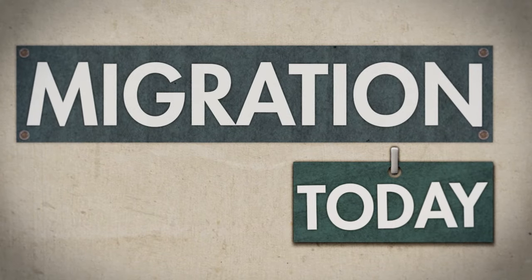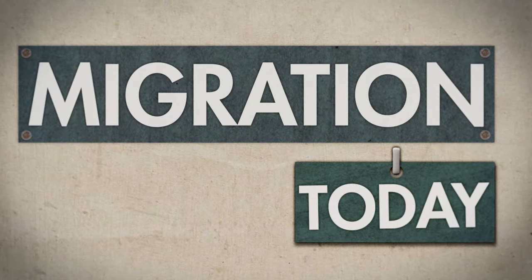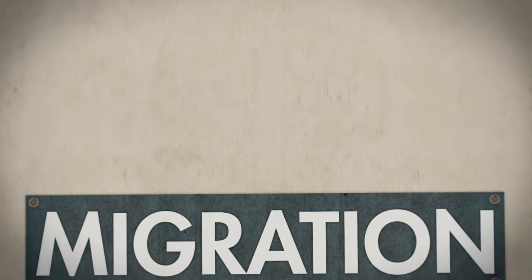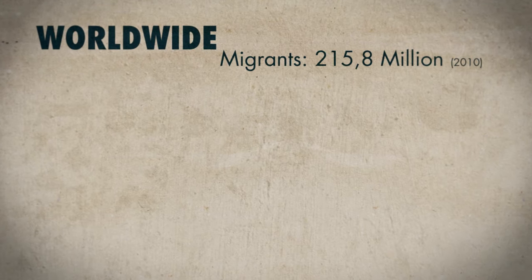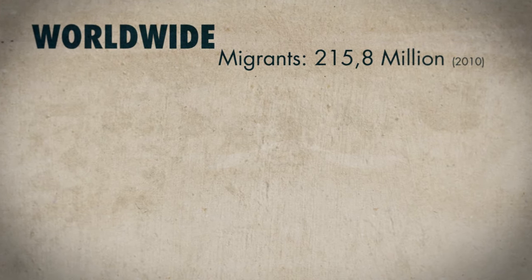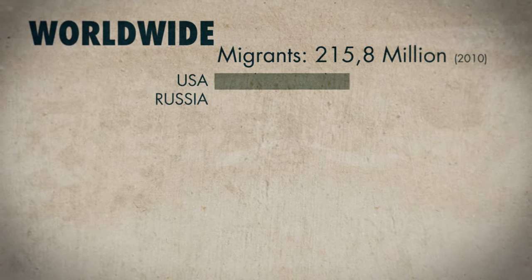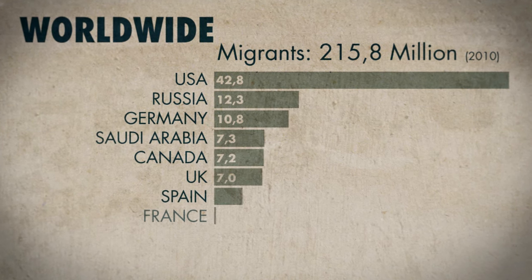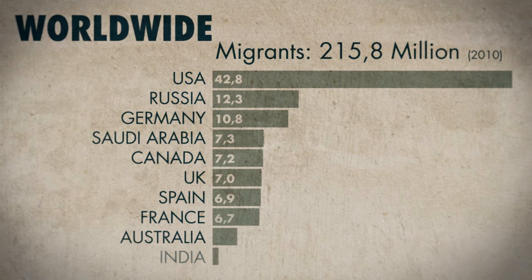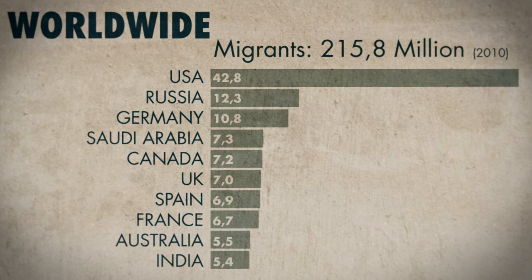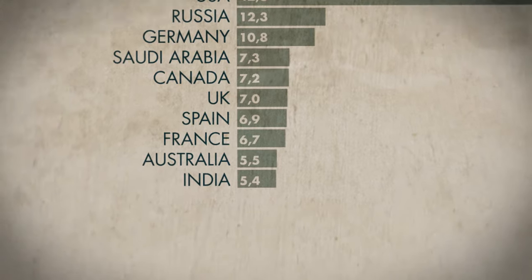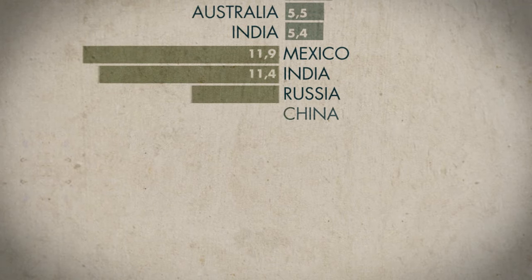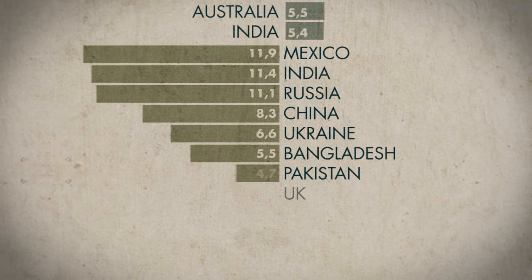What are the main migration routes today? By far most immigrants live in the United States, followed by Russia and Germany. The main countries of origin are Mexico, India, China, and Russia.